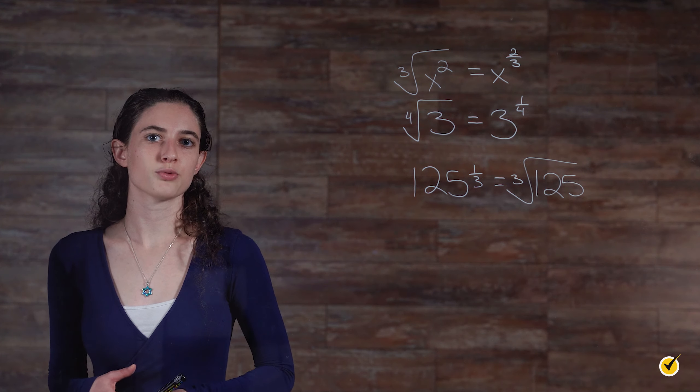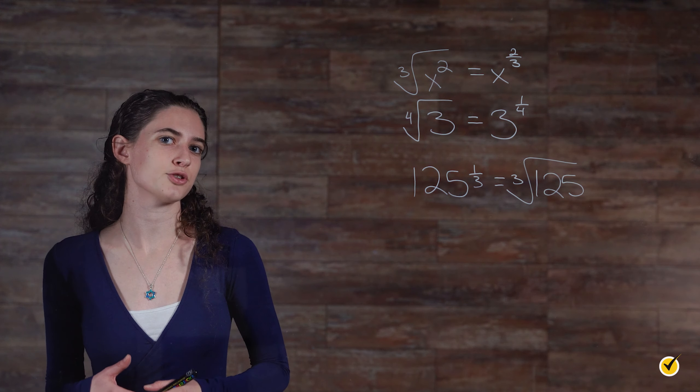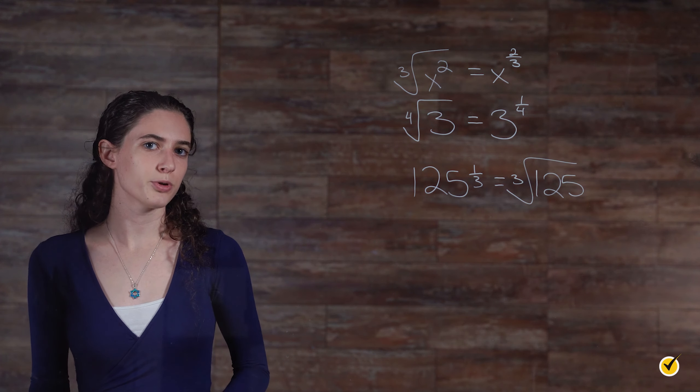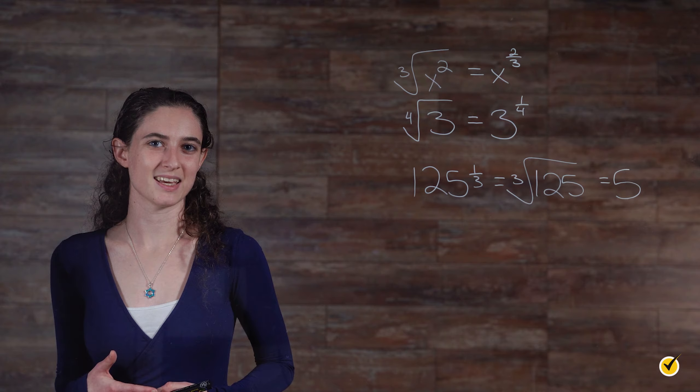Once the conversion to a radical is made, the problem becomes more familiar and the root is easier to evaluate. The cube root of 125 is 5. I hope this review is helpful. Thanks for watching and happy studying!